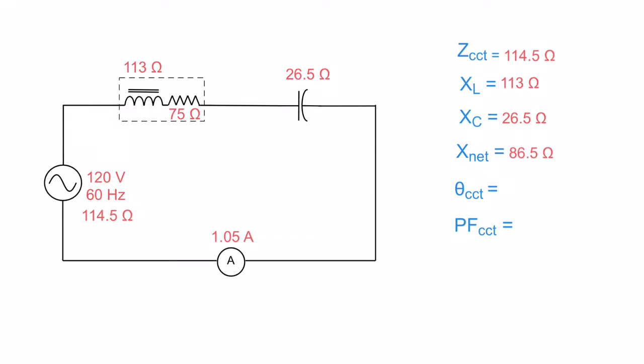We've worked out what our XL was, worked out what our XC was. We subtracted our XC from our XL to get our X net. We used 75 ohms and our X net to determine what our Z of the circuit was. So we put this over here. I know I didn't ask for it, but for poops and giggles, I gave it to you anyways. 120 volts divided by 114.5 ohms gives you a line current of 1.05 amps, which leaves us with two more things to figure out: the theta of the circuit and the power factor of the circuit.